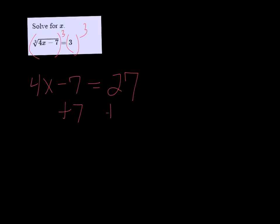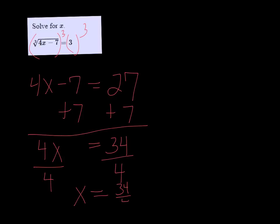Add 7 to both sides, and 4x is equal to 34. Divide both sides by 4, and we get that x is equal to 34 over 4, which reduces to 17 over 2.